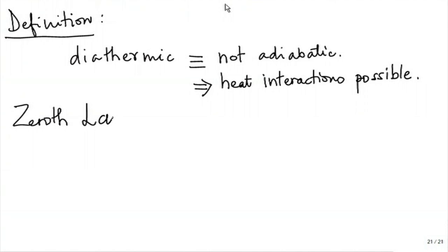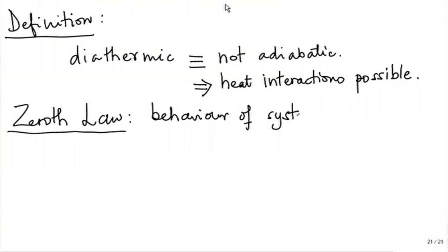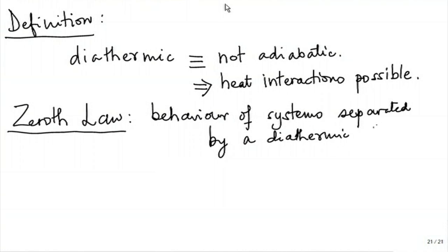A diathermic wall, partition, or boundary means a non-adiabatic interface — work interaction may be possible, but apart from that, heat interaction is also possible. Just as the first law was a generalization of the behavior of adiabatic systems, the zeroth law is based on a study of the behavior of systems separated by a diathermic boundary.